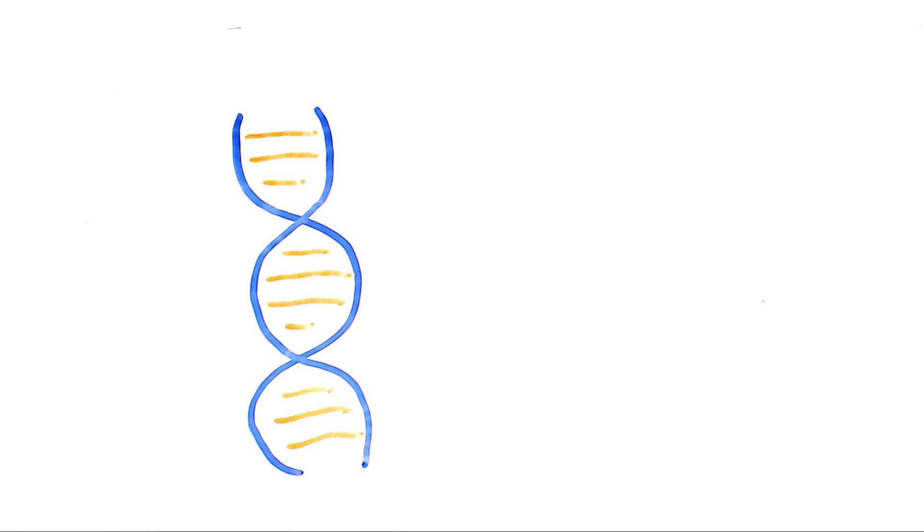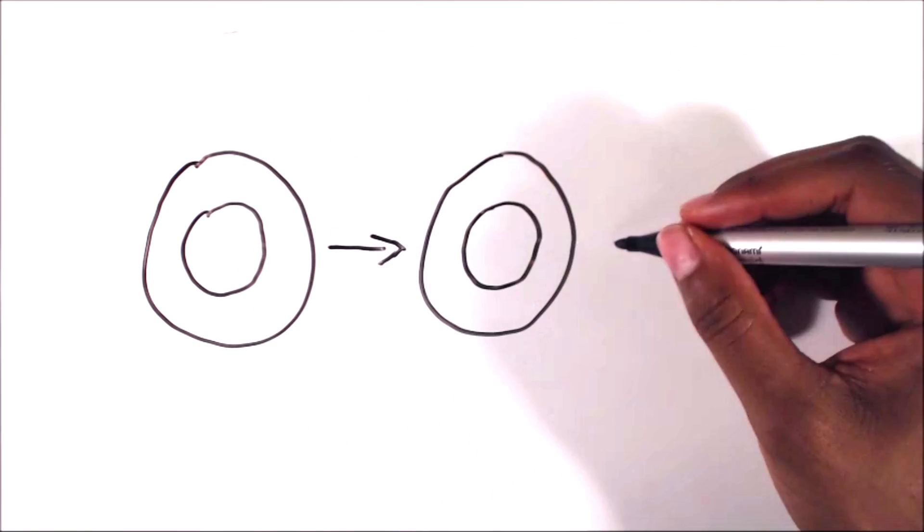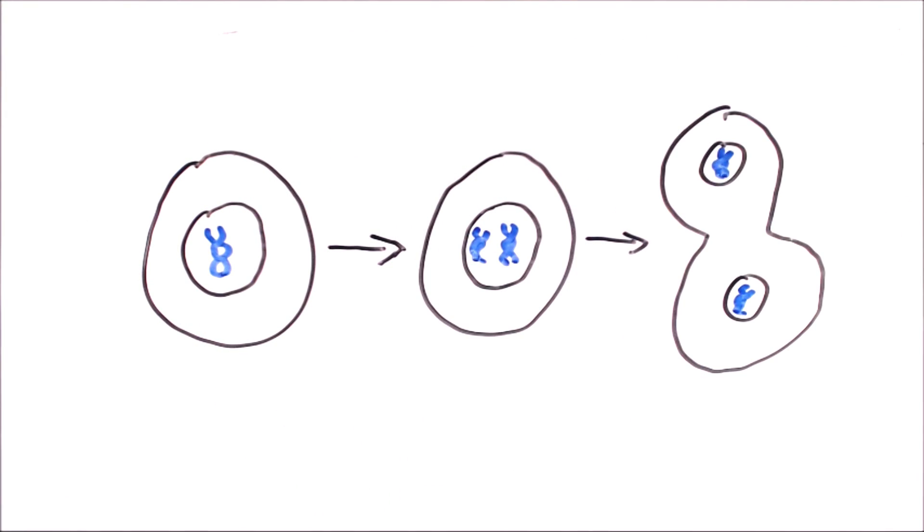The DNA controls what the cell does, and one of the functions is to tell the cells when to divide and how often to divide. This is the cell cycle.